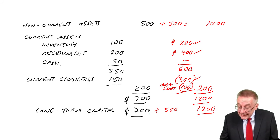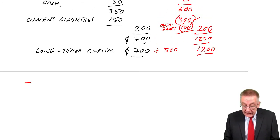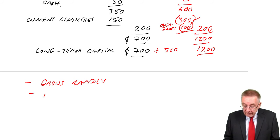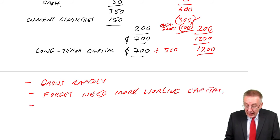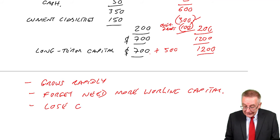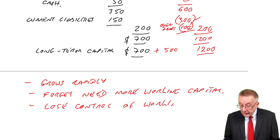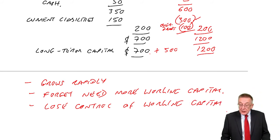And so that's what overtrading is. It's where a company grows rapidly, they forget they'll need more working capital, and they lose control of the working capital. Then they have, as I've been explaining, liquidity problems. And what's the solution?